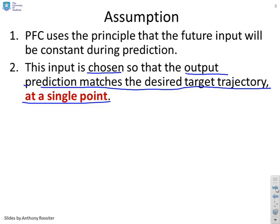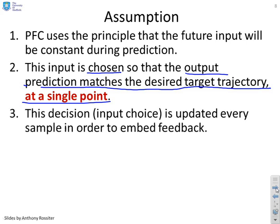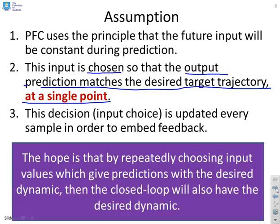You've got your target, which has the desired dynamic, and you force your prediction to match the target at a single point. The decision you make is what input will force this matching. Obviously, you update that every sample, and then you get feedback. So the hope is that by repeatedly choosing the input values, which give predictions with the desired dynamic, then the closed-loop will implicitly inherit that desired dynamic.